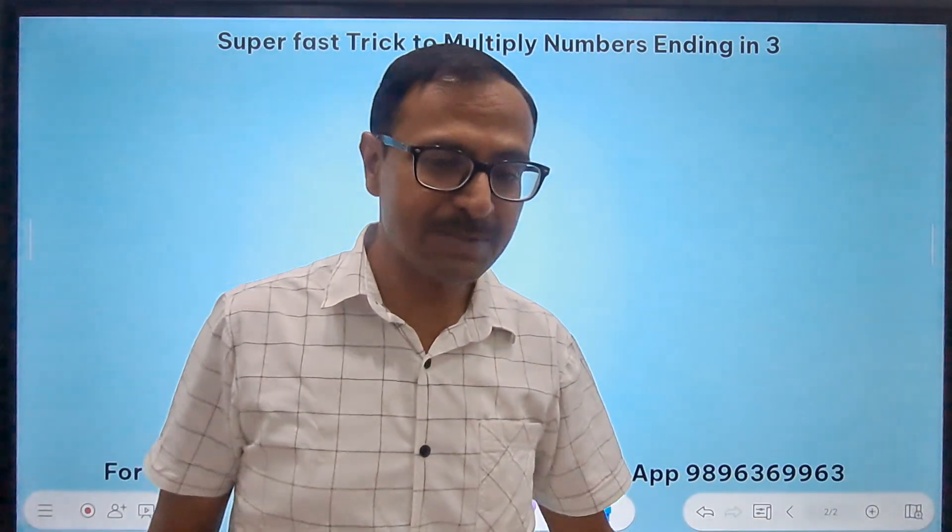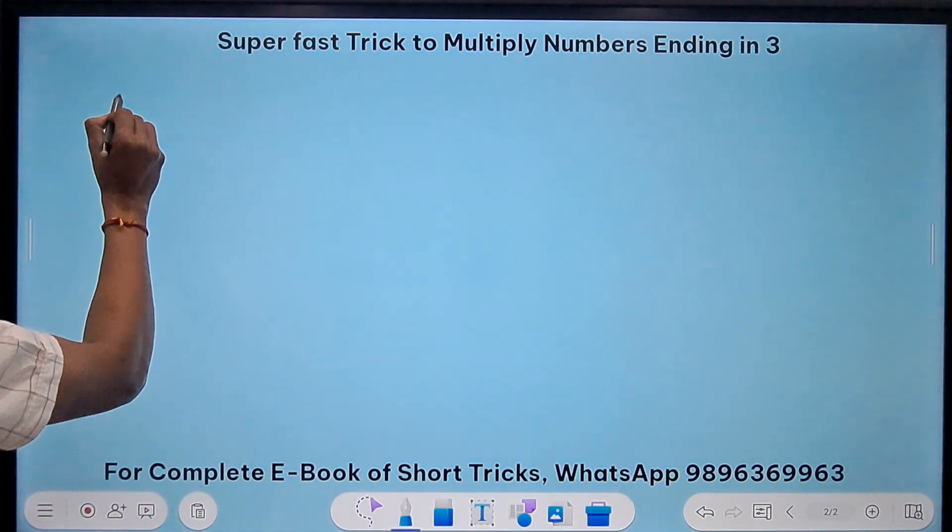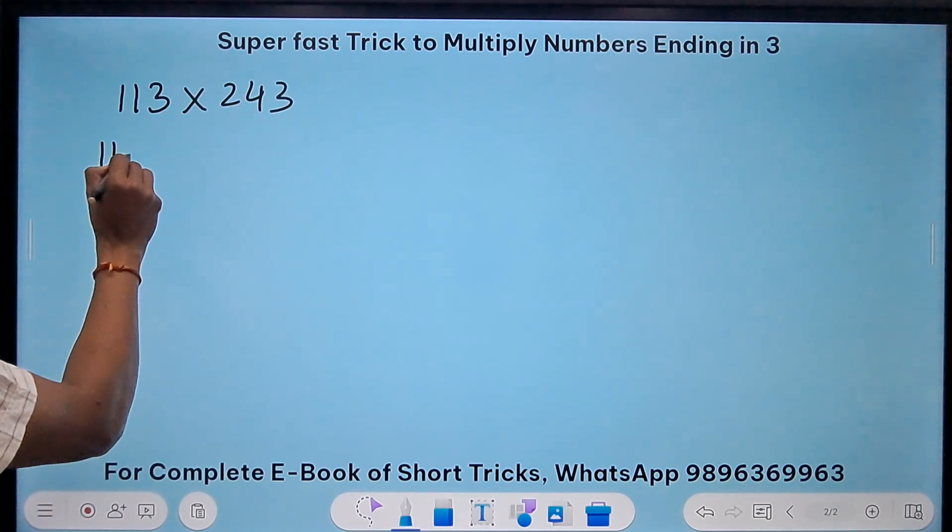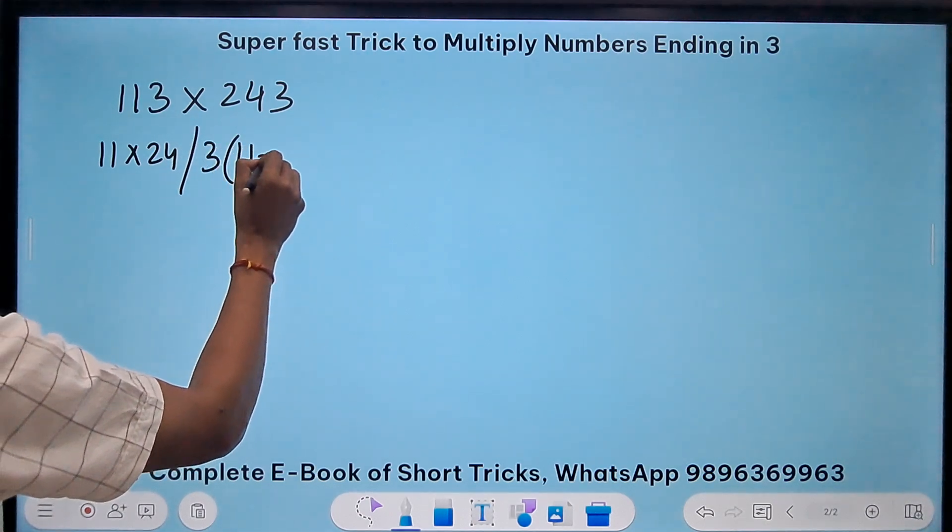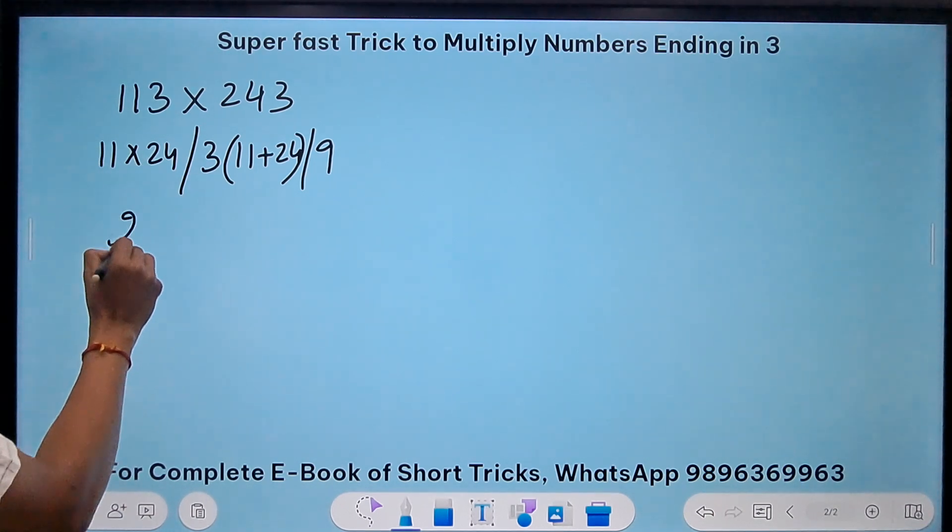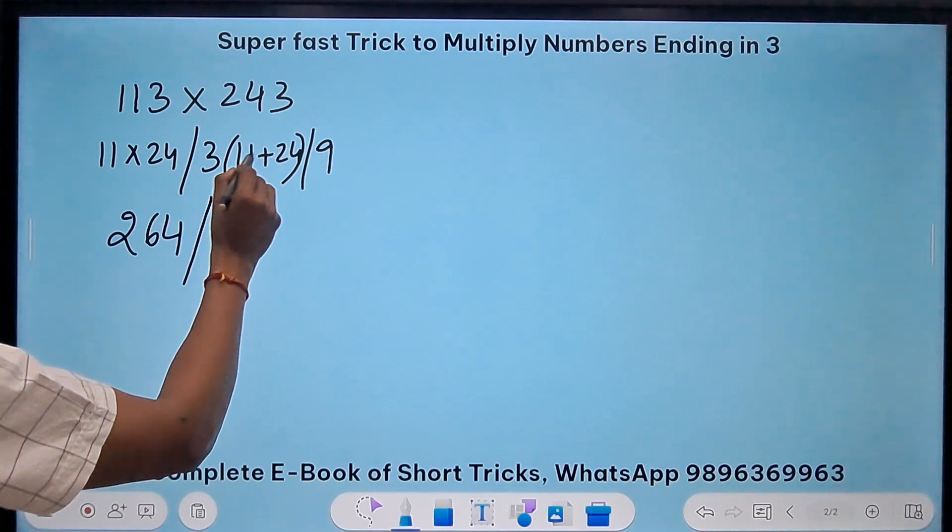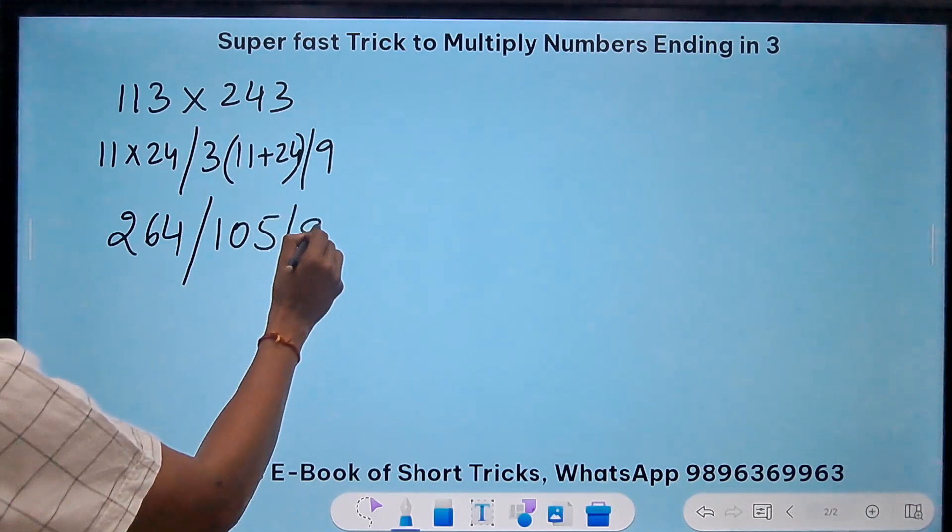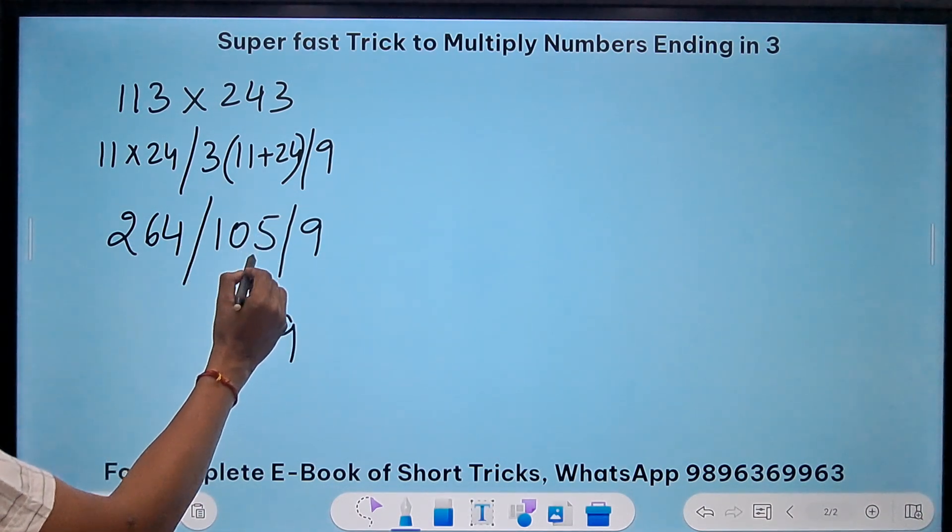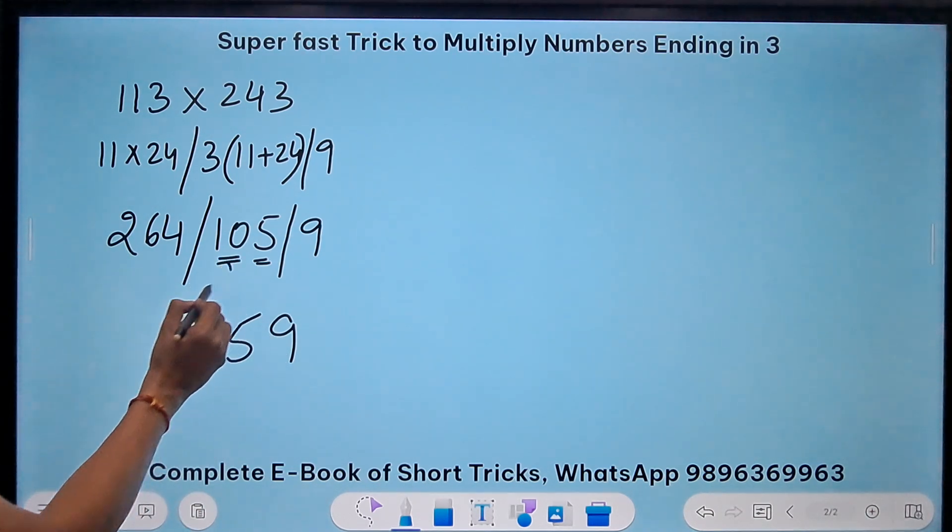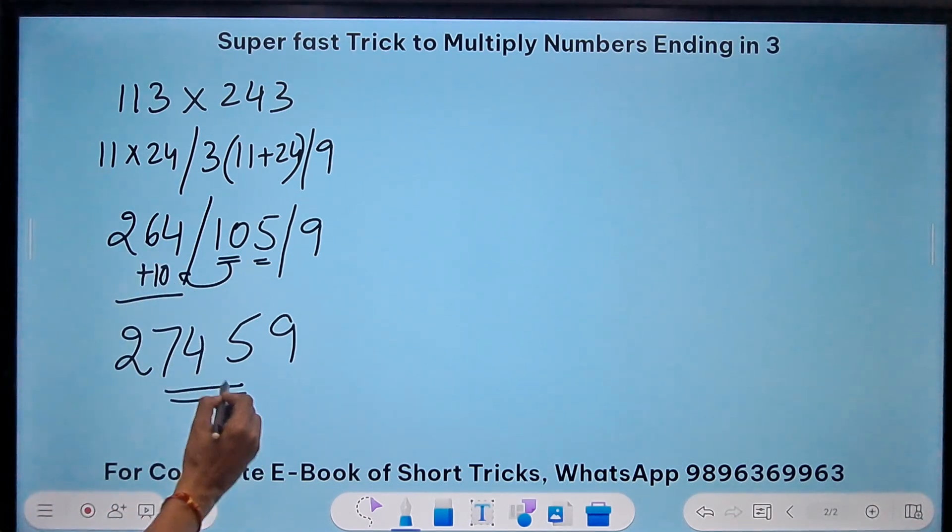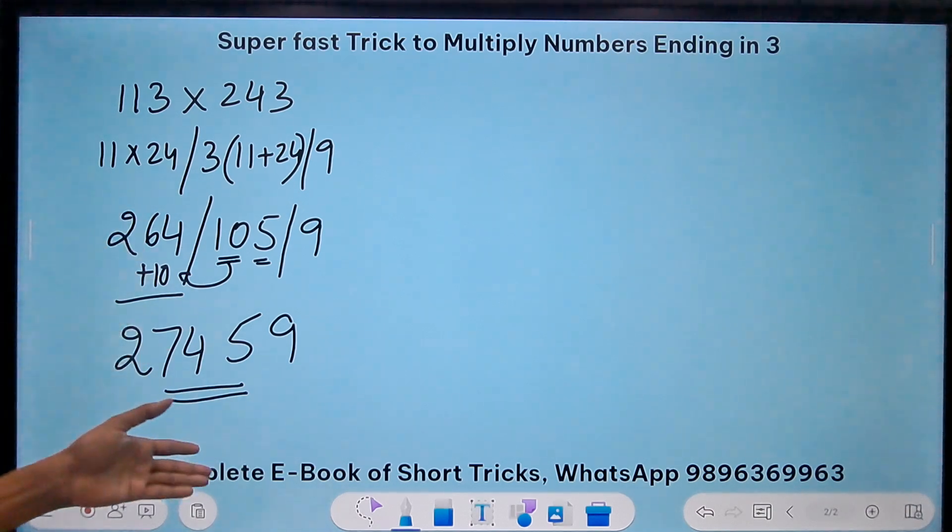You want to apply it to some more larger numbers? Let's see, can you take two numbers, both of which are three digit numbers? Say 113 and 243. Let's take these. 11 times 24, slash, 3 times 11 plus 24, and slash 9. This is 11 times 24 is 264. This is 35 times 3 is 105, and finally the 9. The 9 remains as such, 105 means 5 comes here and the 10 gets carried forward, so plus 10. This is 274. So 27459 is the product.